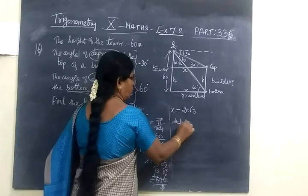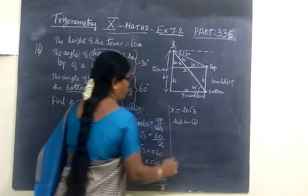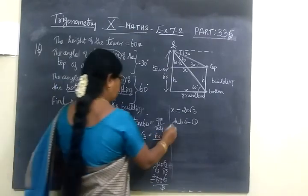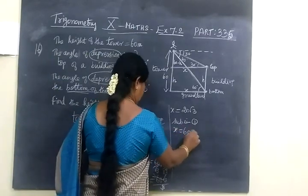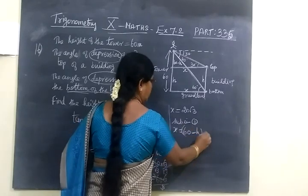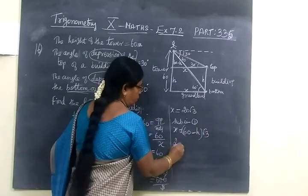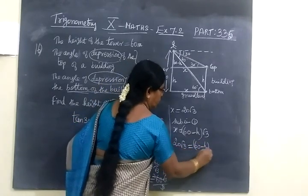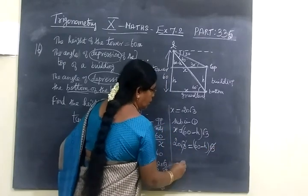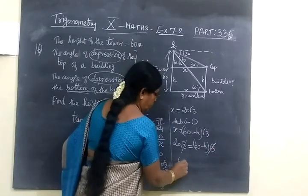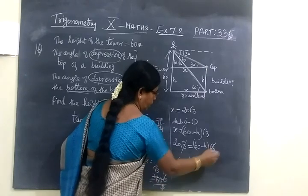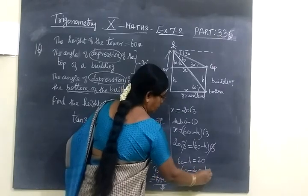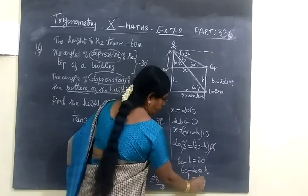Now you substitute in equation 1. You want to find h. You substitute in 1. Here instead of x equals to 60 minus h into root 3, for x you are writing 20 root 3 equal to 60 minus h.